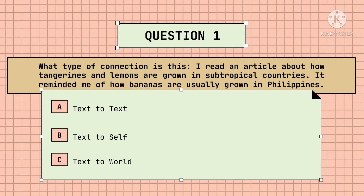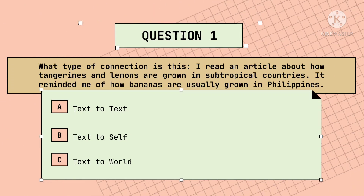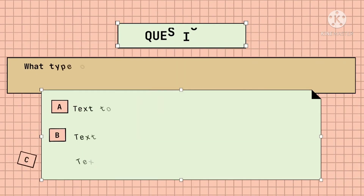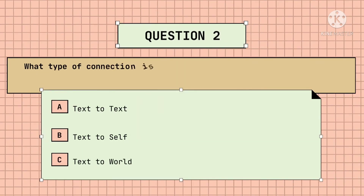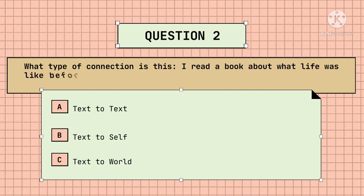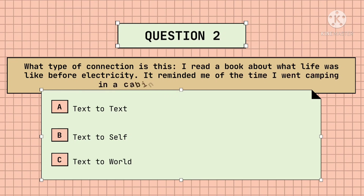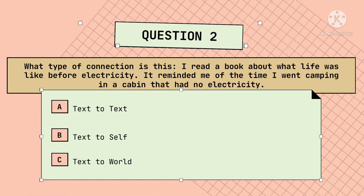Very good! That is text-to-world. Next, number 2. What type of connection is this? Text-to-text, text-to-self, or text-to-world? Pause the video before I reveal the answer. Correct! That is text-to-self.